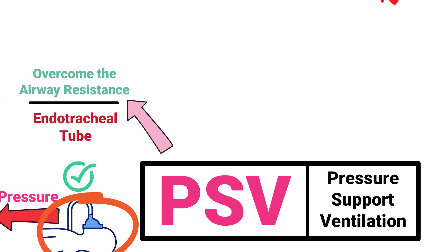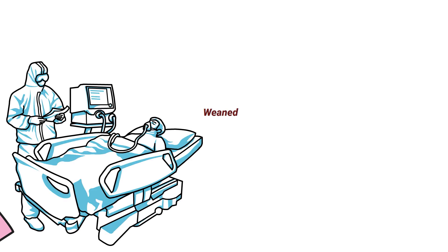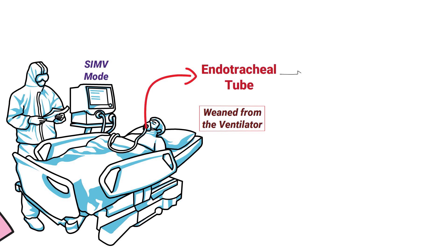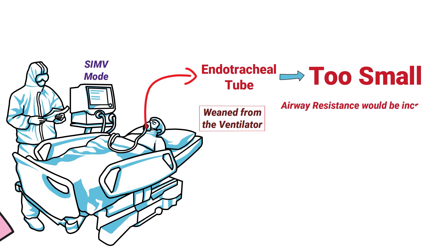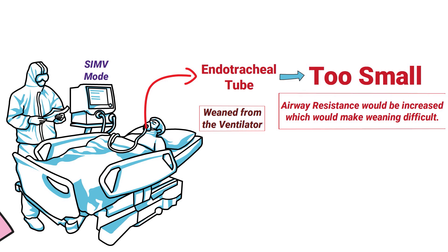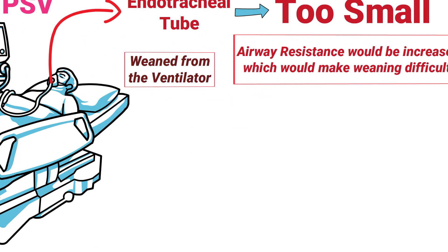Pressure support is often used to help a patient overcome the airway resistance caused by the endotracheal tube. For example, if there is a patient who needs to be weaned from the ventilator in SIMV mode and their endotracheal tube size is too small, the airway resistance would be increased, making weaning difficult. That's when pressure support would come in handy to help the patient overcome the airway resistance so they can be weaned and extubated.